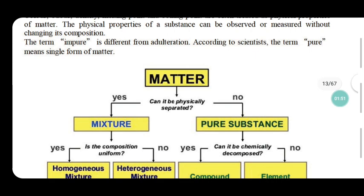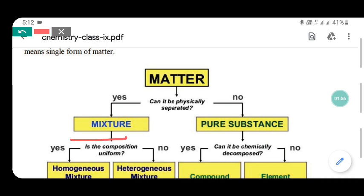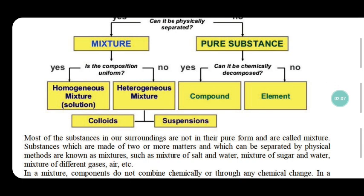Now see the classification of matter. Matter is classified as mixtures and pure substances. Mixtures are of two types: homogeneous and heterogeneous. Pure substances are classified as compounds and elements.